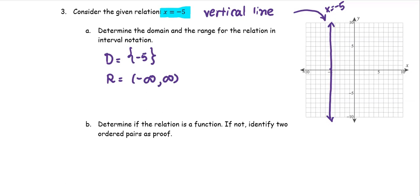In part b, we determine if the relation is a function. If not, identify two ordered pairs as proof. Based on the graph, the graph does not pass the vertical line test because only one vertical line can be used in this case, and also show enough that there are at least two ordered pairs.